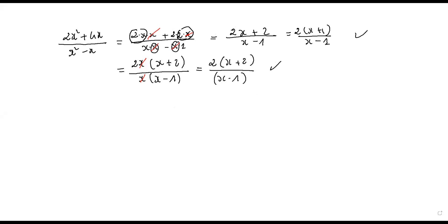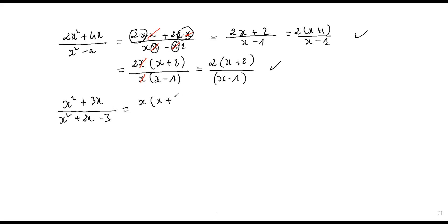The next one is x squared plus three x over x squared plus two x minus three. Here you can factorize the numerator by x, giving x times x plus three. For the denominator, you need two numbers whose sum is two and product is negative three.